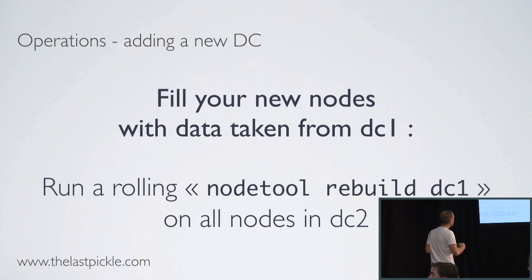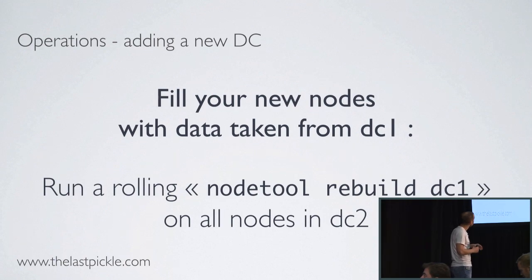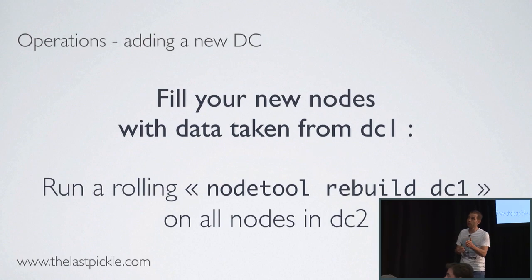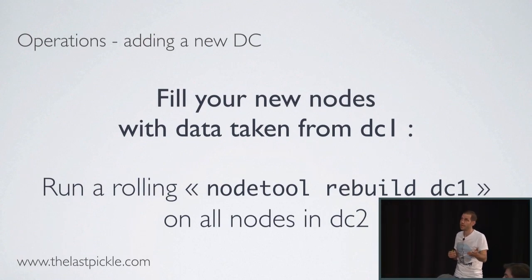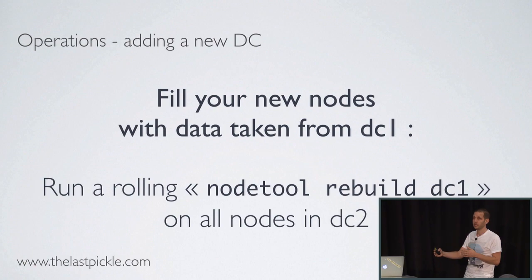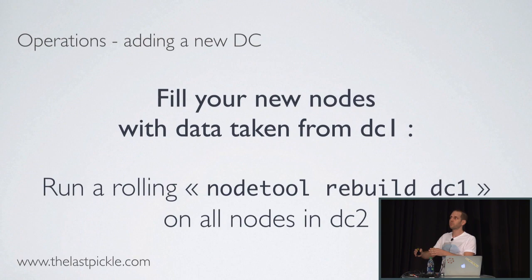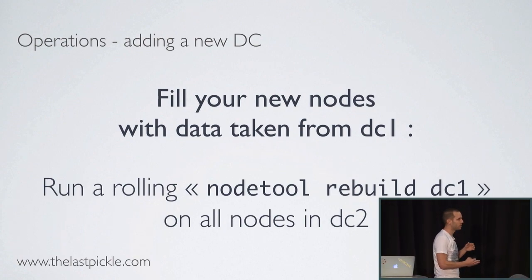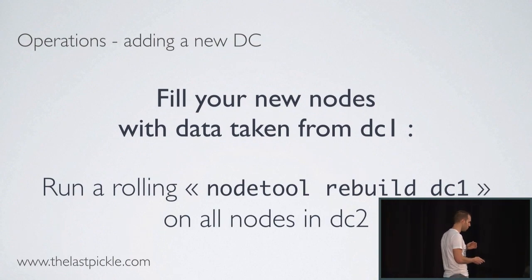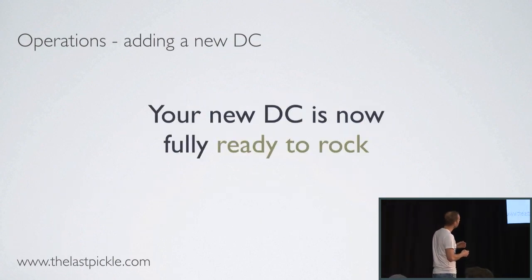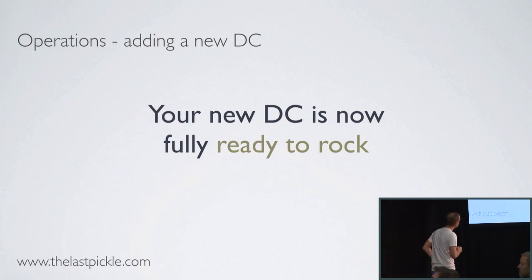Now we are ready to fill our new nodes with data taken from DC1. You will run a rolling nodetool rebuild with the name of the DC that actually has data, on all nodes in DC2. This is a per-node operation, so you don't want to overload your cluster by running it on all nodes at the same time. But you do have to do it on all of your nodes. Now your new DC is ready to run.